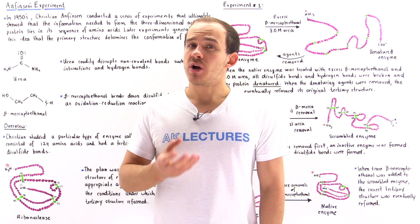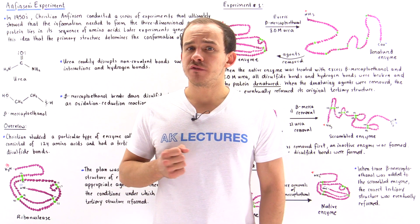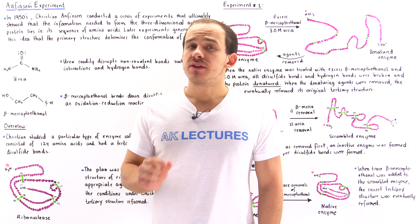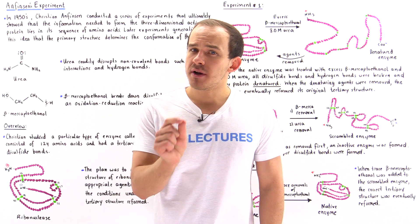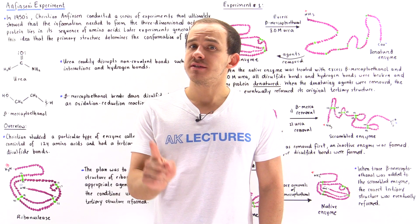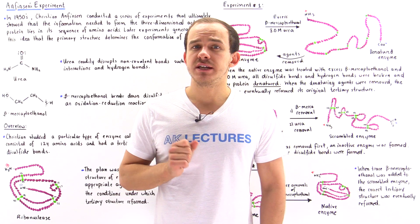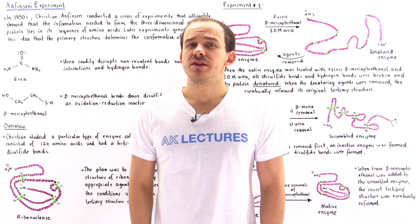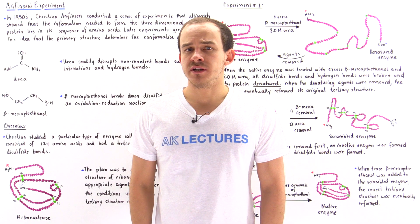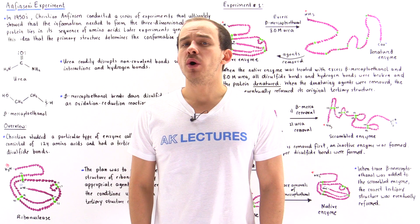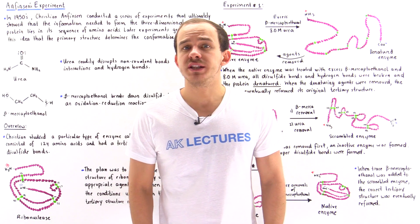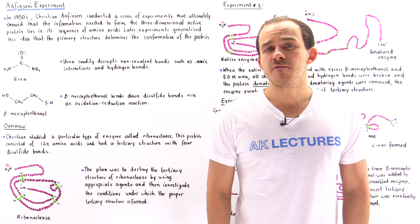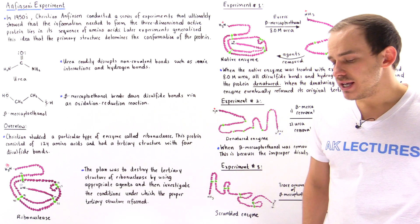In our discussion on the primary structure of polypeptides, we said that it's the primary structure — that specific sequence of amino acids in a polypeptide — that ultimately determines what the final three-dimensional conformation of the polypeptide is.